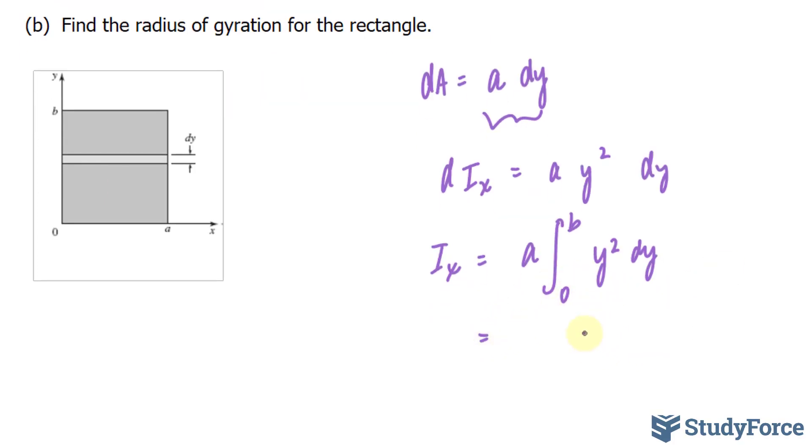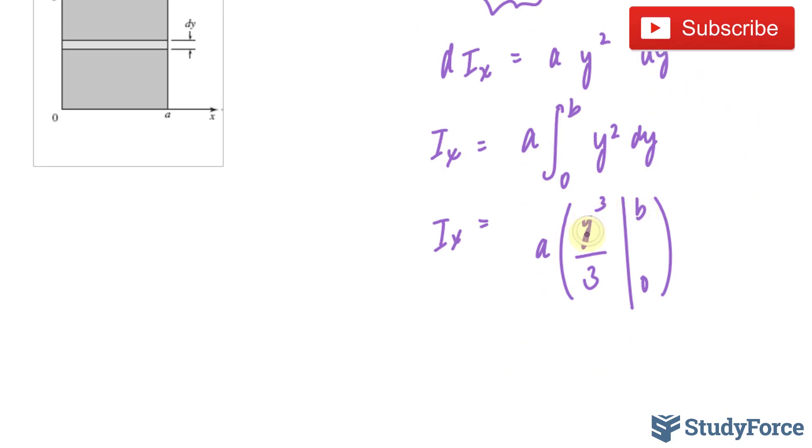The integral of y to the power of 2 is y to the power of 3 over 3. And we'll find out what this is equal to when y is equal to b and when y is equal to 0. Substituting b into here, we end up with b to the power of 3 over 3, minus substituting 0 into here gives us 0.